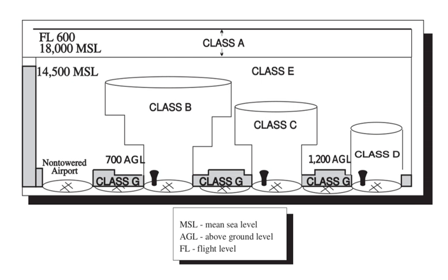Class C – Operations may be conducted under IFR, SVFR, or VFR. All aircraft are subject to ATC clearance. Aircraft operating under IFR and SVFR are separated from each other and from flights operating under VFR, but VFR flights are not separated from each other. Flights operating under VFR are given traffic information in respect of other VFR flights. Class D – Operations may be conducted under IFR, SVFR, or VFR. All flights are subject to ATC clearance. Aircraft operating under IFR and SVFR are separated from each other, and are given traffic information in respect of VFR flights. Flights operating under VFR are given traffic information in respect of all other flights.